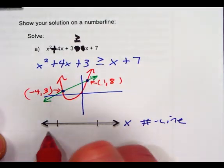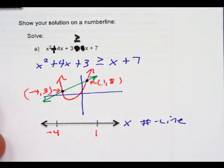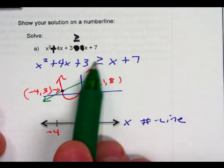Therefore, my boundary points are negative 4 and 1. Now you notice I didn't put dots on the number line yet or circle them because I have to go back and look at my symbol. My symbol is greater than or equal to.